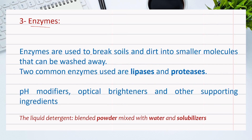Third, enzymes. Enzymes are used to break soils and dirt into smaller particles that can be washed away. Two common enzymes used are lipases and proteases. These three major components are mixed with other ingredients such as pH modifiers, optical brighteners, and other supporting ingredients to prevent soil and dirt from settling back on washed clothes. Liquid detergent is formed by mixing the blended powder with water and solubilizers to keep the water and detergent blended evenly.